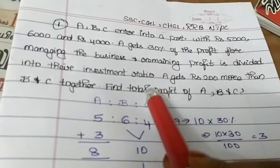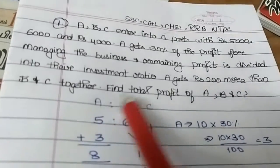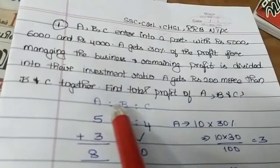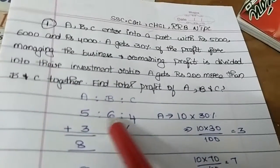Find the total profit of ABC. So ABC investment ratio is 50,000, 60,000, 40,000. 10,000 cancel. Then 5 to 6 to 4.